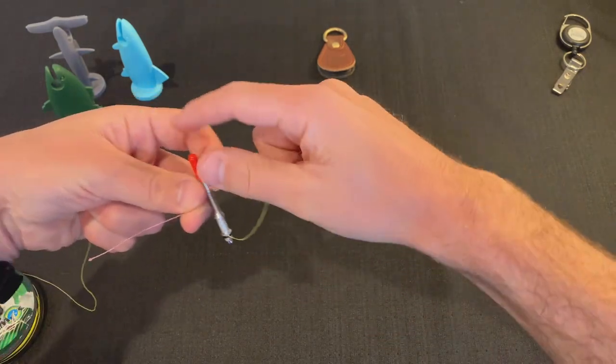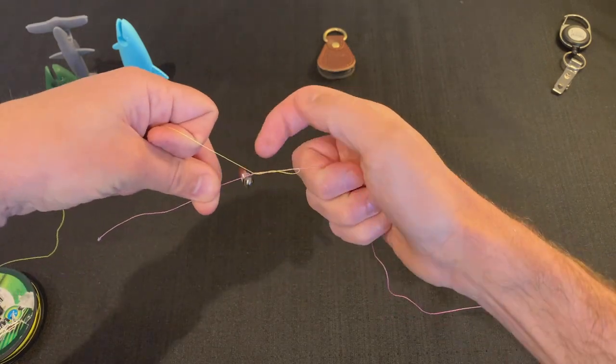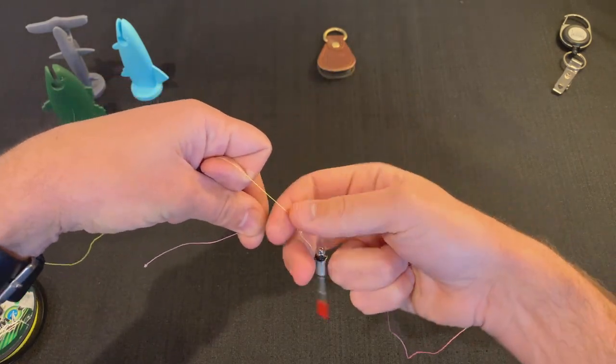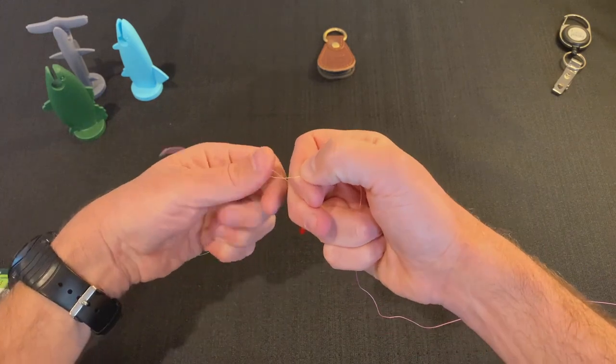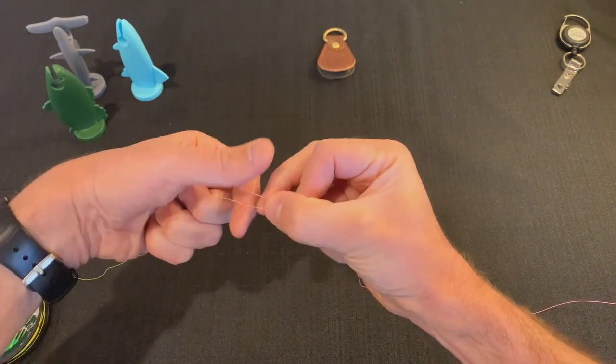the two lines with the knot needle like this and then just let it hang on that side. Now because I went away from me the first time I'm going to come back towards me on this side.